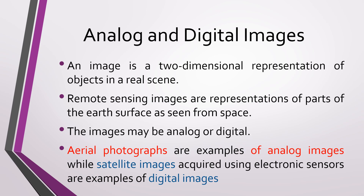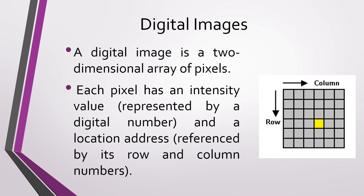Analog image and digital image. Analog images include aerial photographs and hard copy images. Digital images include satellite imageries captured by electronic sensors. A digital image is a two-dimensional array of pixels. A pixel is a two-dimensional representation of a digital image.